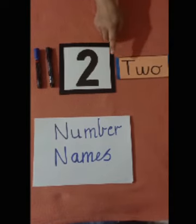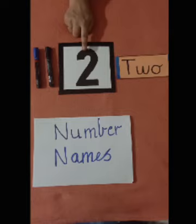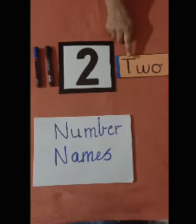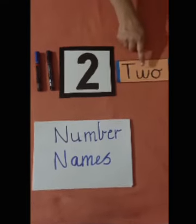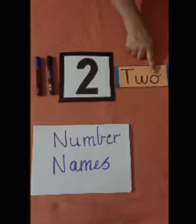Children you have to repeat after me. Which number is this? 2 and the name of number 2 is T, W, O, 2.